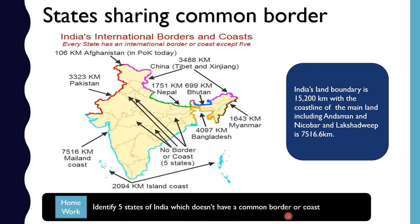Coming to Nepal, the states sharing a border are Uttarakhand, Uttar Pradesh, Bihar, Sikkim, and West Bengal. West Bengal, below Sikkim, also shares a border with Nepal. Coming to Indian states sharing a border with Bangladesh: West Bengal, Assam, Meghalaya, and Tripura share the common border.